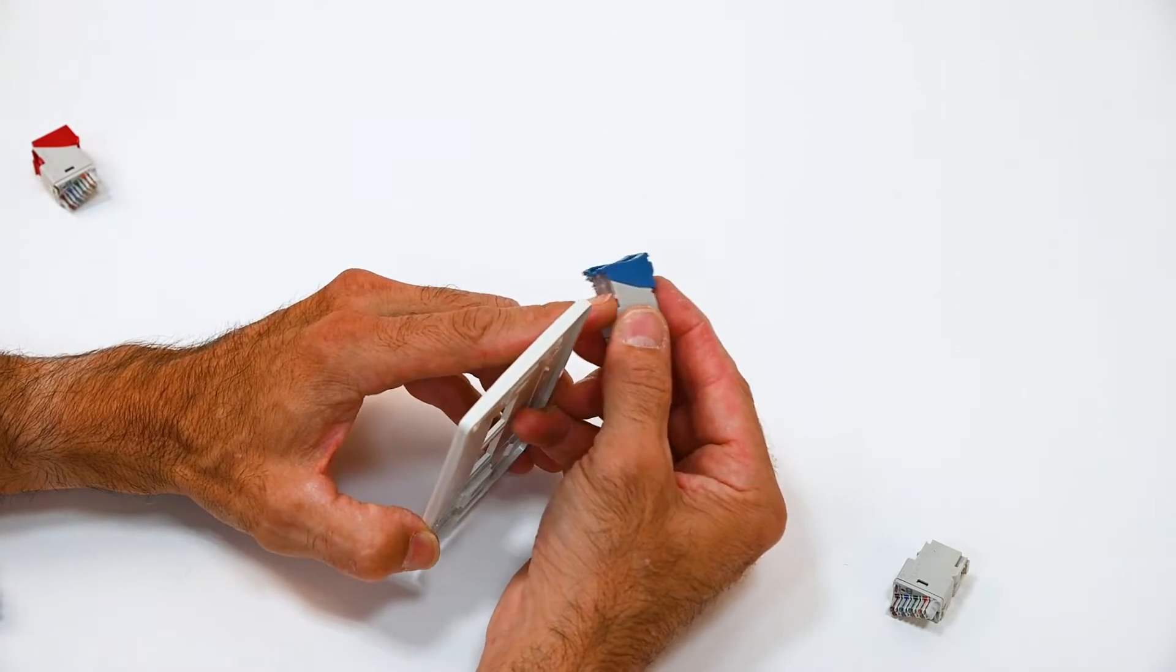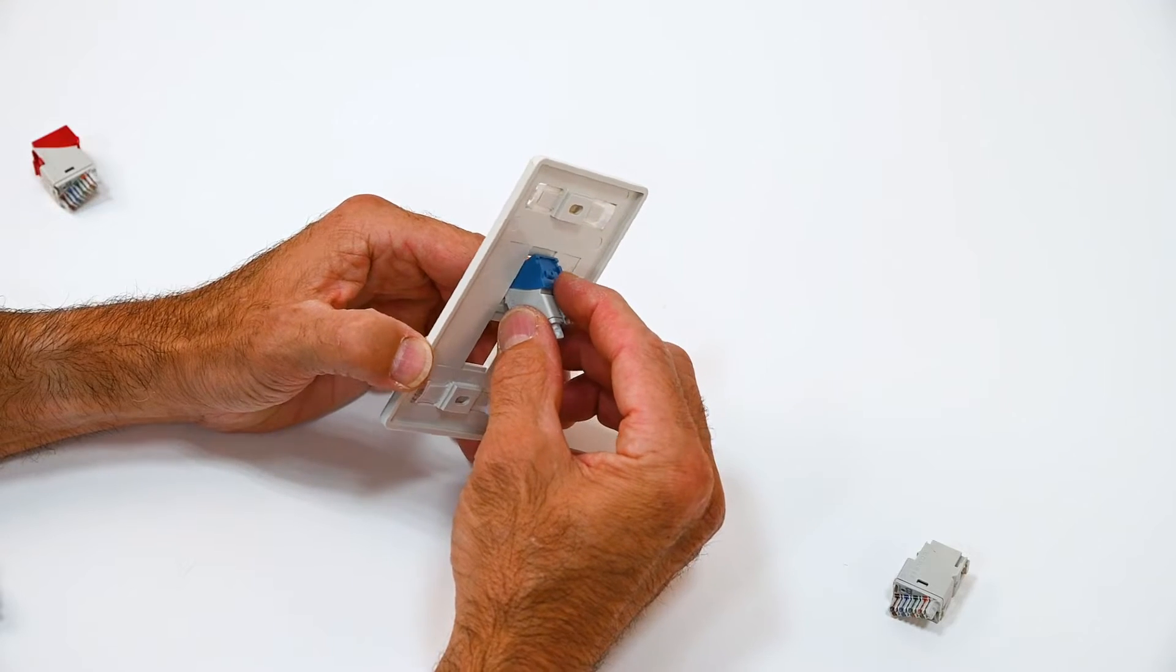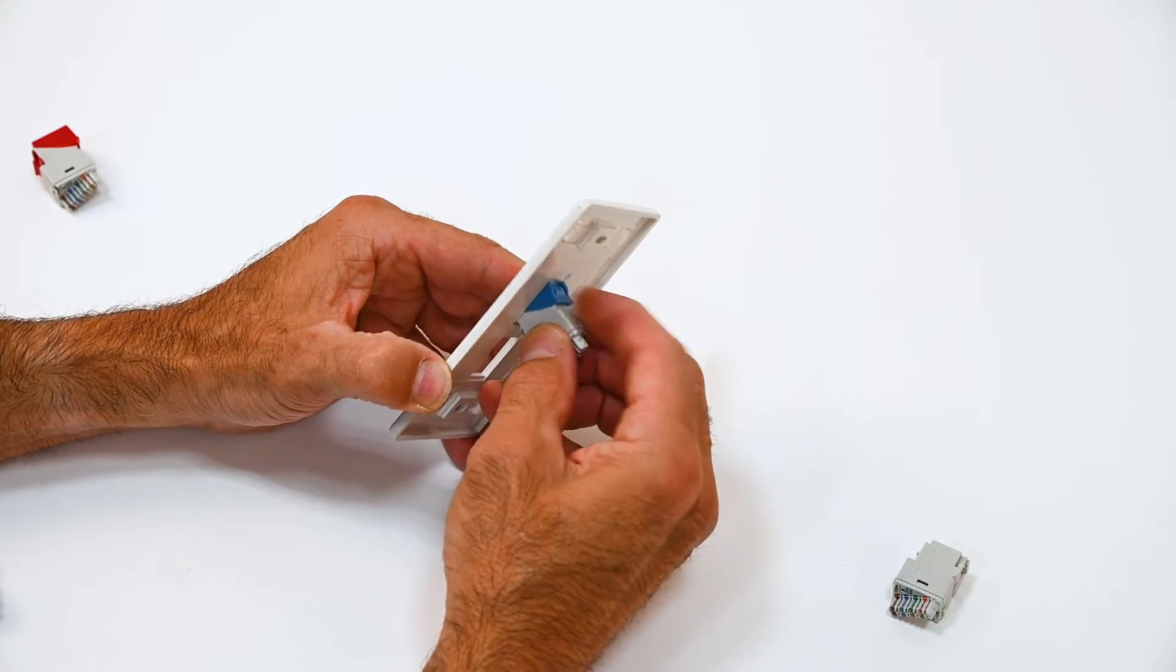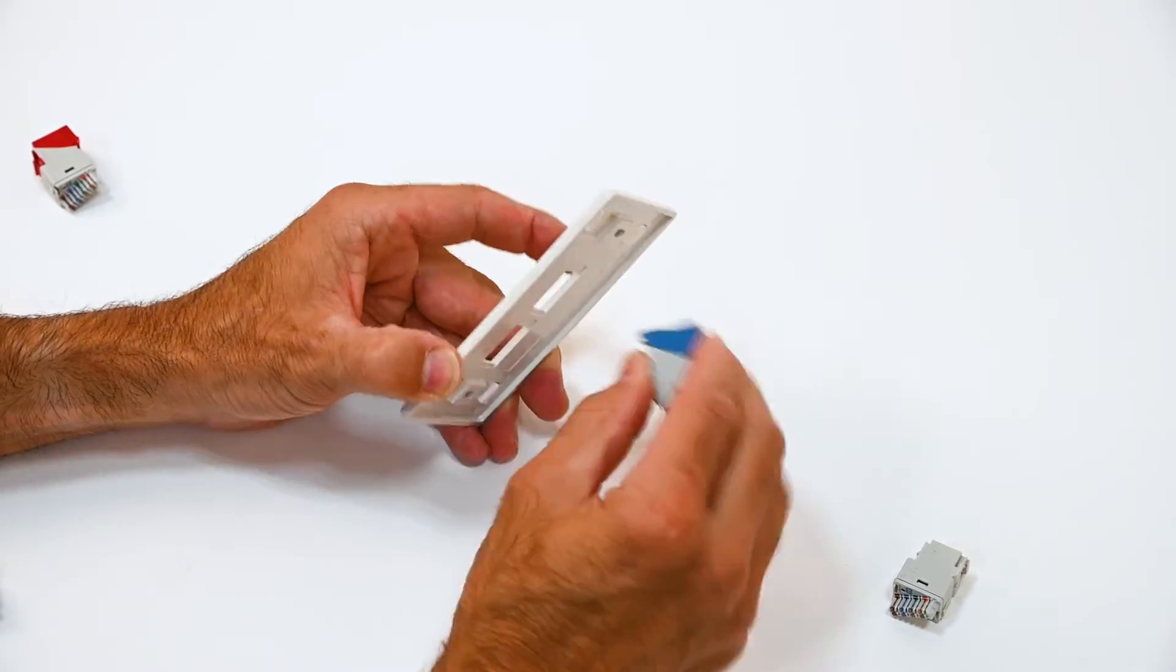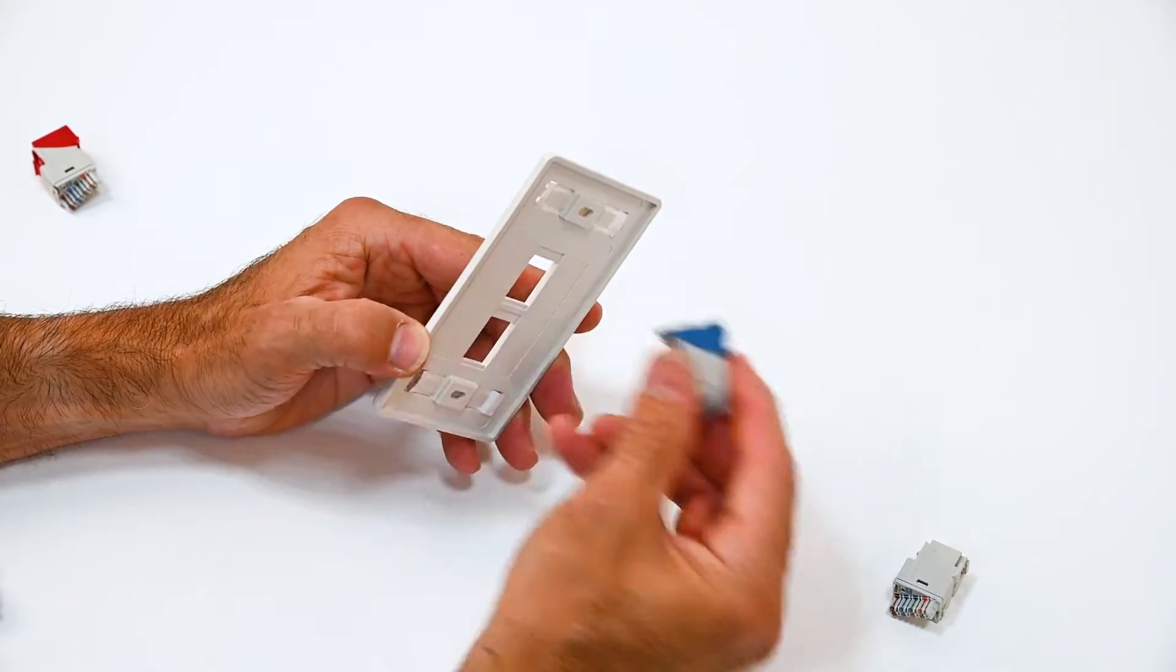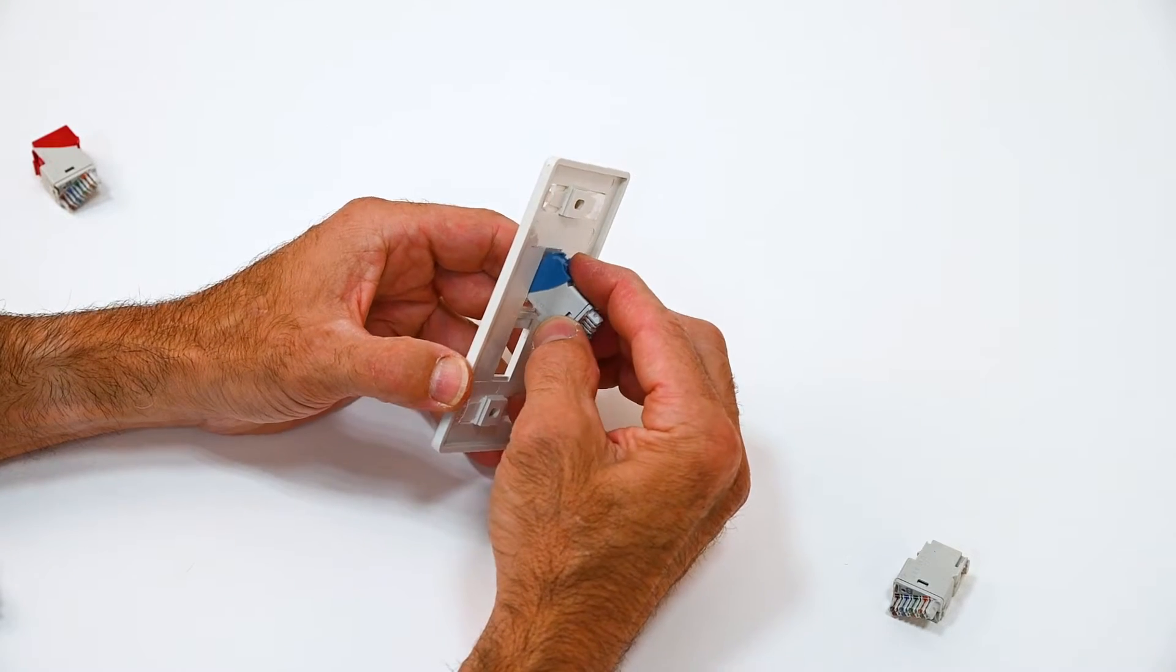So one little tip is you want to be able to catch this latch in the right spot to rotate this into place from the back side. These jacks will mount from the front or the back. So if you're coming in from the back though you want to catch that latch just in the right spot,